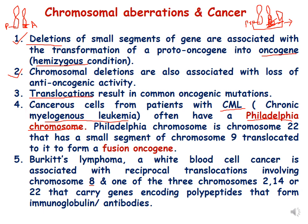The last example is Burkitt's lymphoma, a white blood cell cancer associated with reciprocal translocations involving chromosome 8 and one of three chromosomes: 2, 14, or 22. These chromosomes carry genes encoding polypeptides that form immunoglobulins or antibodies. Whenever this reciprocal translocation between chromosome 8 and chromosomes 2, 14, or 22 occurs, it results in Burkitt's lymphoma.